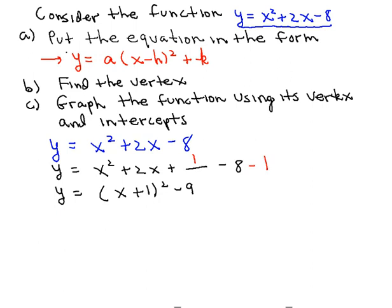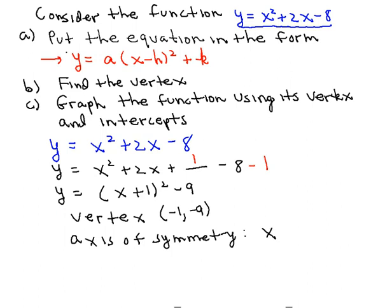So now we have the equation in the other form where we can pick out the vertex and the axis of symmetry. So the vertex will have the coordinates negative 1, negative 9. And the equation for the axis of symmetry will be x is equal to negative 1.